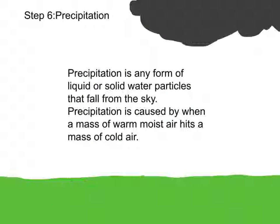Step 6: Precipitation. Precipitation is any form of liquid or solid water particles that fall from the sky. Precipitation is caused by when a mass of warm, moist air hits a mass of cold air.